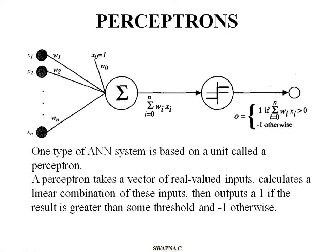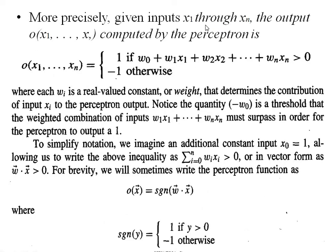The figure shown here is about the Perceptron. The Perceptron takes a vector of real valued inputs, calculates a linear combination of all these inputs, and then outputs 1 or minus 1. If the result is more than some threshold value, it gives output as 1; otherwise it gives output as minus 1. This is the simple representation of the Perceptron, which is the basic unit of the artificial neural network.